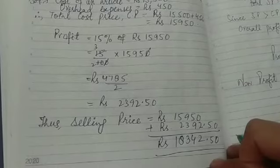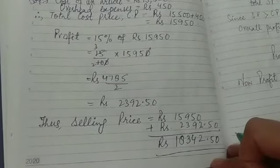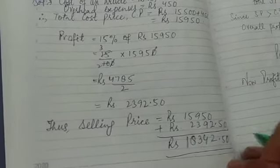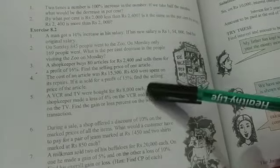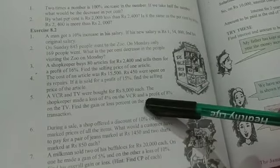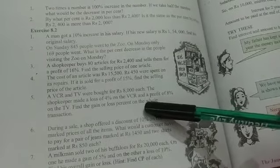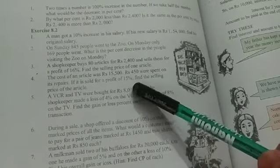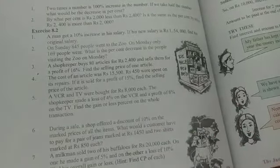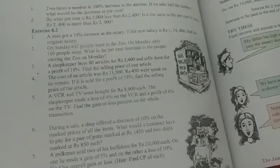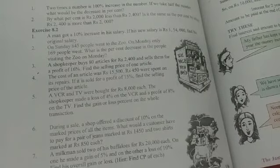The answer is ₹18,342.50. Now the next question: a VCR and a TV were bought for ₹8,000 each — that means we bought one VCR and one TV, both at ₹8,000 each.